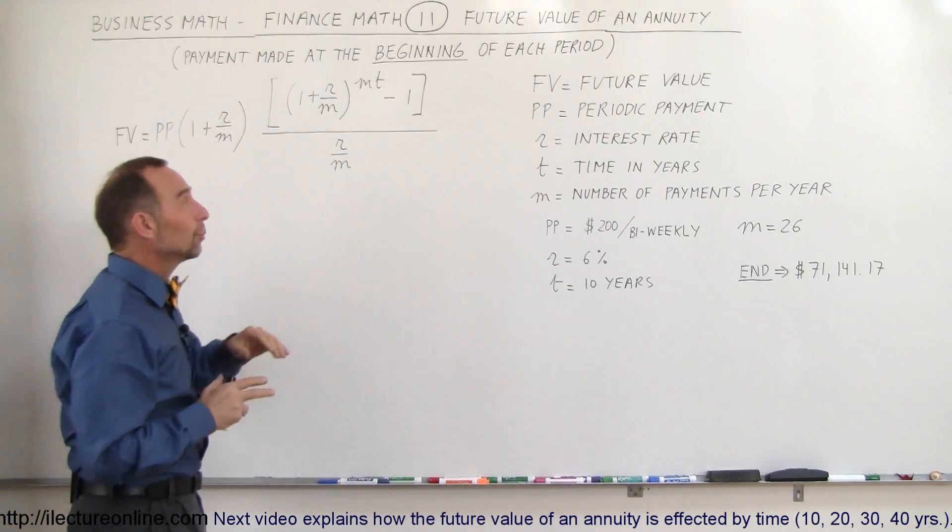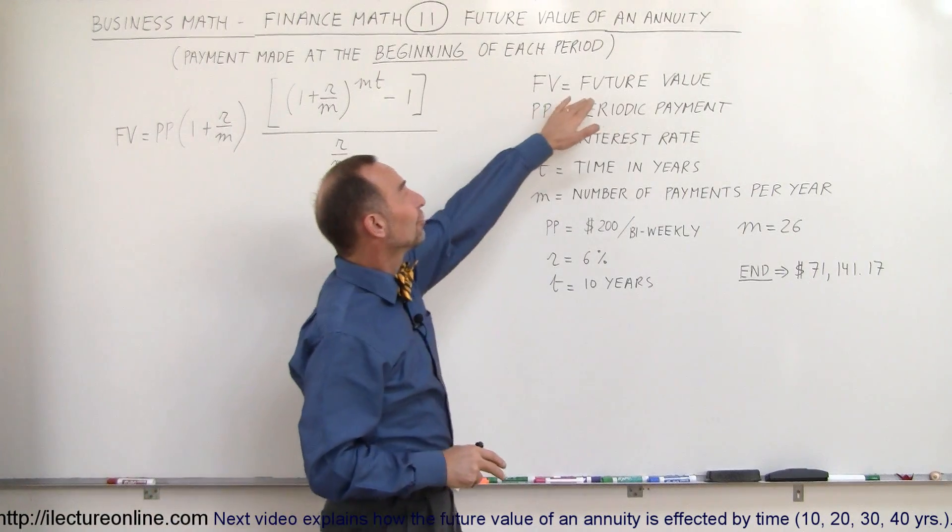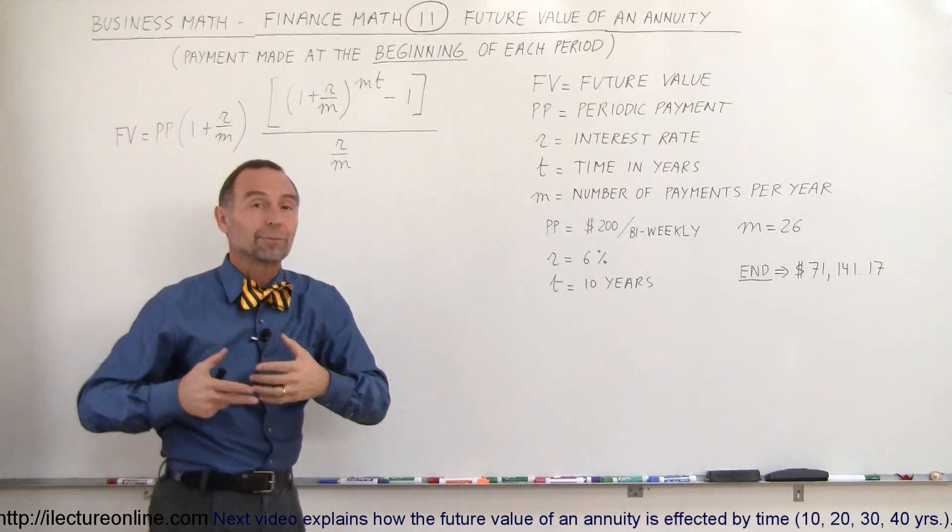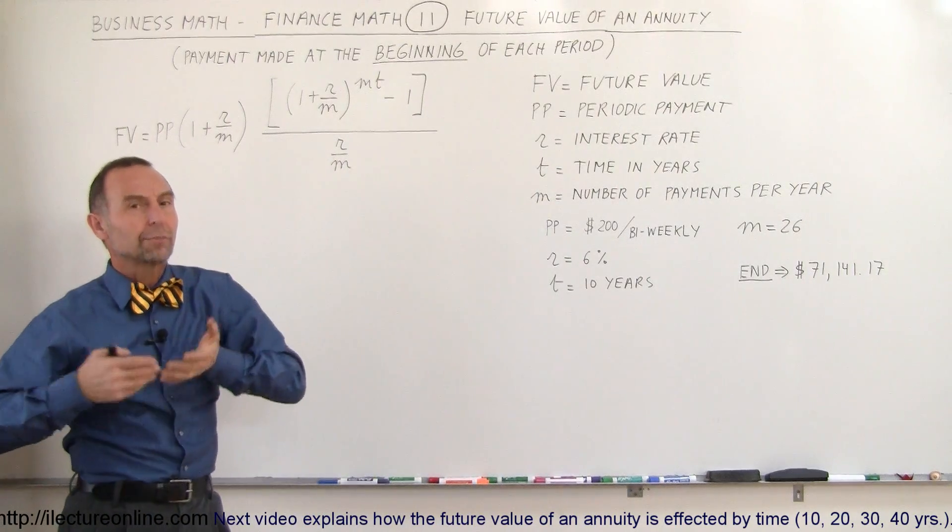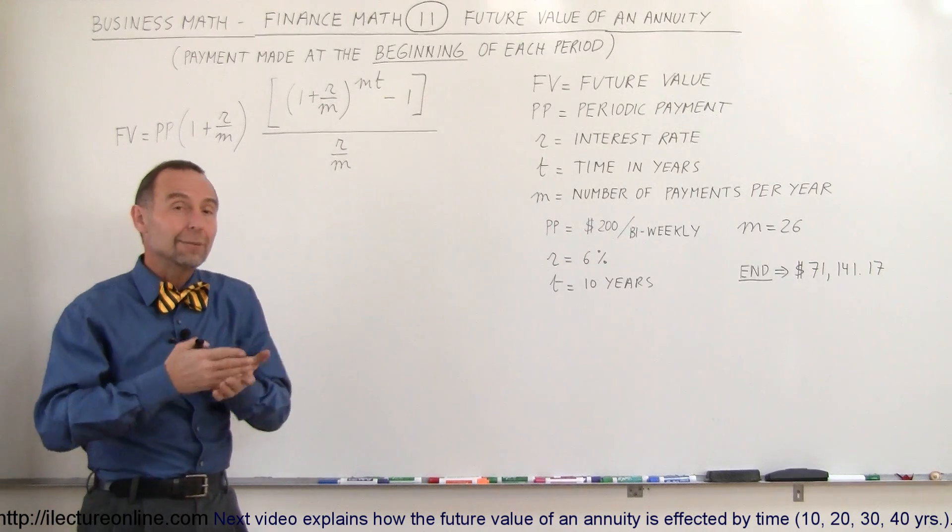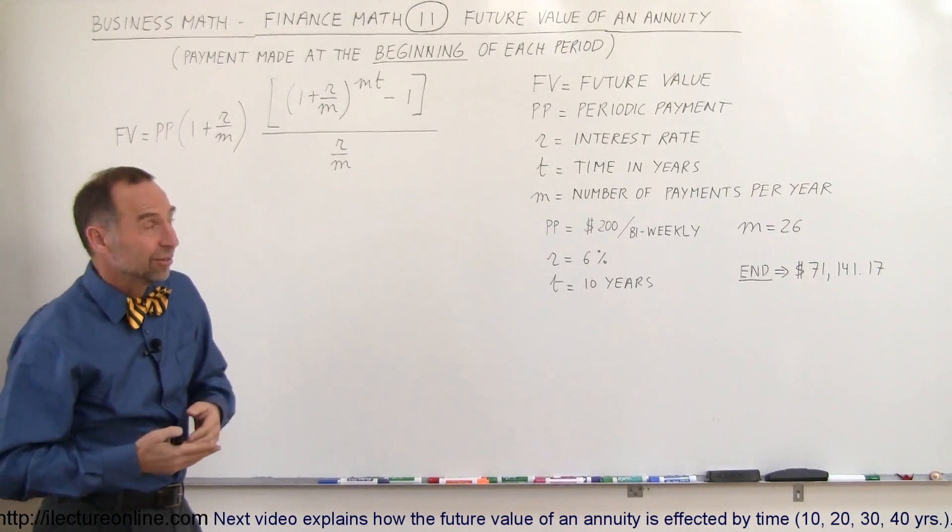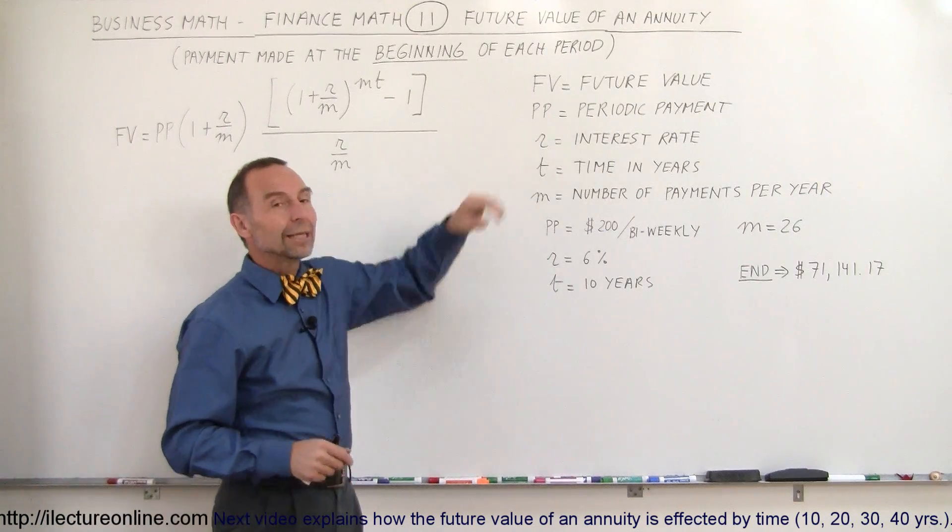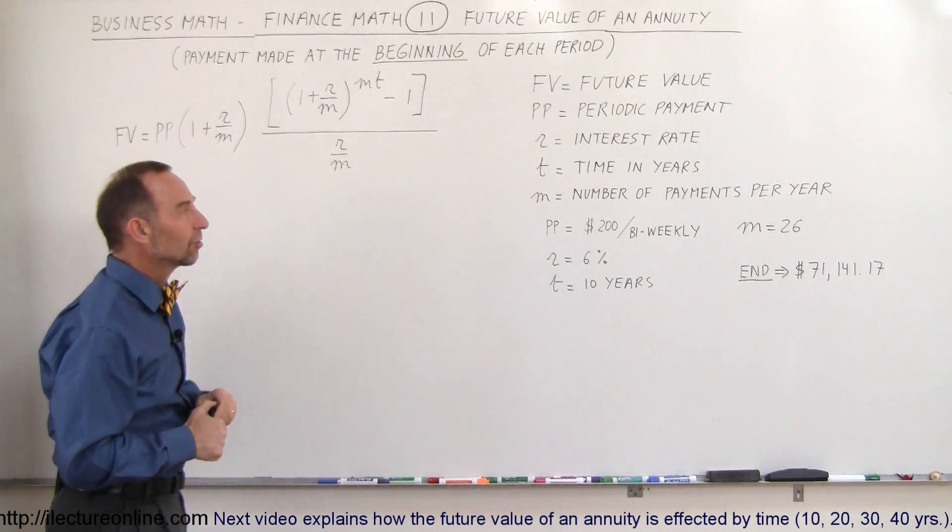So again, to show you what we mean here, FV stands for future value, PP stands for periodic payment. The reason why we'll call it periodic payment is because we don't know what the period is. It could be weekly, bi-weekly, monthly, semi-annually, doesn't matter. We can adjust by calling the period, whatever the time period has to be.